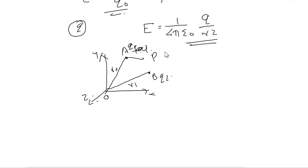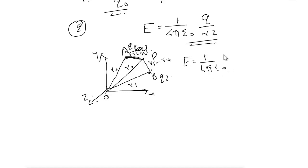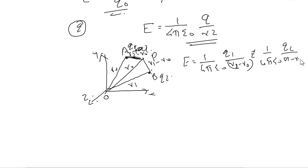Renaming the charges as q1 at A and q2 at B: if the point P is at position r0, then the distances are r2 minus r0 and r1 minus r0. The electric field at P is: E = (1/4πε₀) × [q1 / (r2 − r0)²] + (1/4πε₀) × [q2 / (r1 − r0)²]. We take the sum of electric fields due to each charge at the particular point.